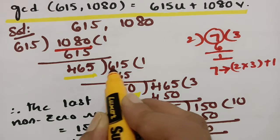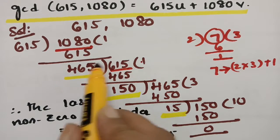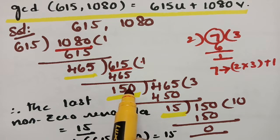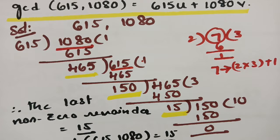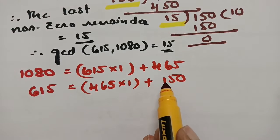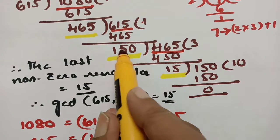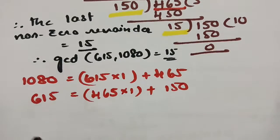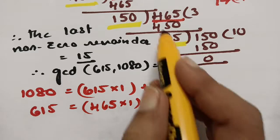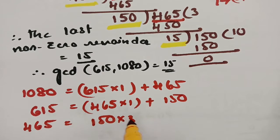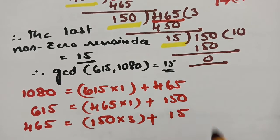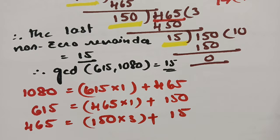465 is the remainder. For 615, we multiply: 615 equals 465 times 1 plus remainder 150. And for 465: 465 equals 150 times 3 plus remainder 15. Our last remainder here is 15 — please remember that.